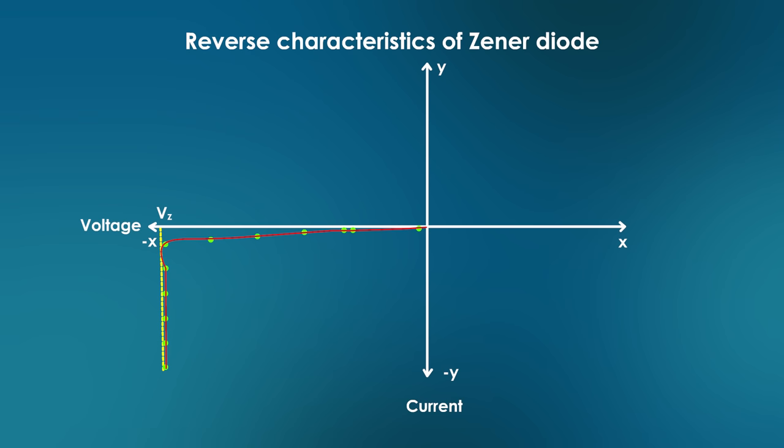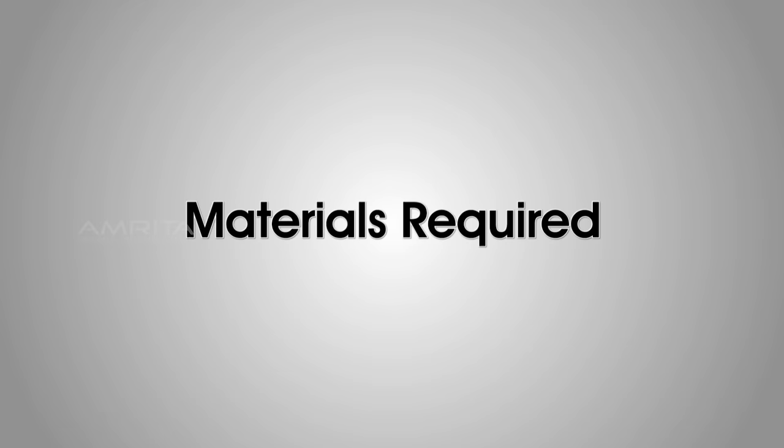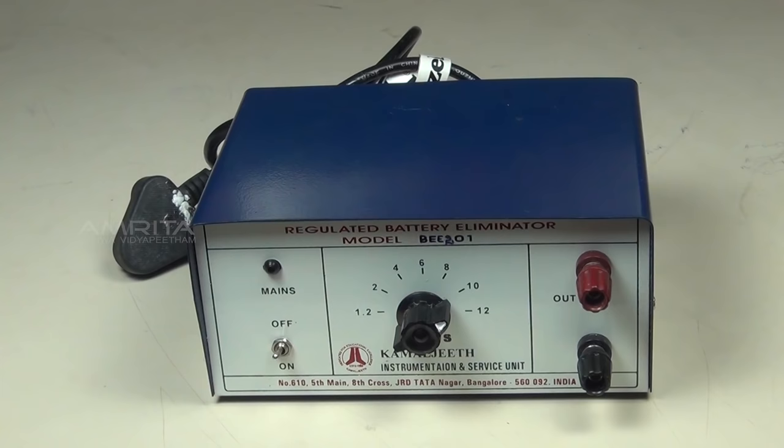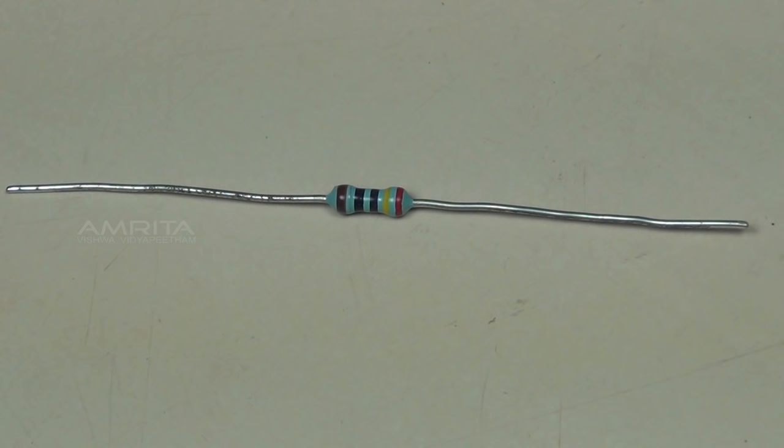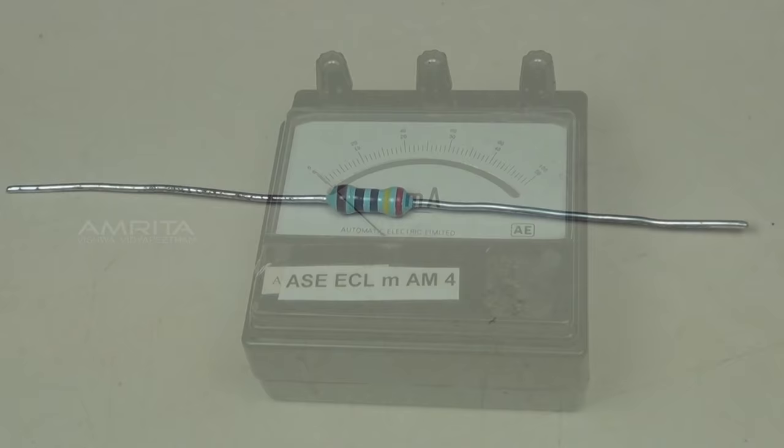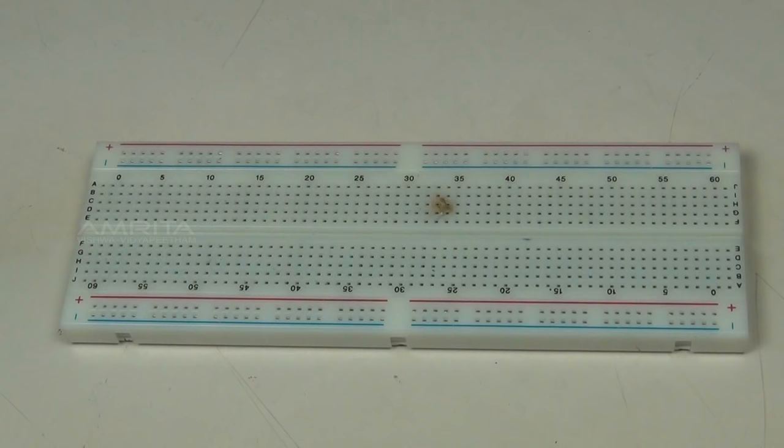The constant voltage obtained from the graph is called breakdown voltage. Materials required: Battery, Rheostat, small resistor of 200 Ohms, Milliammeter, Voltmeter, Key, Breadboard, and Zener Diode.